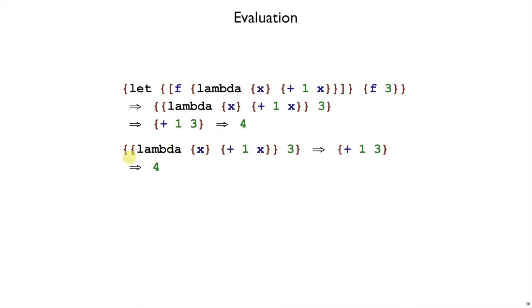We could also write, literally, left curly, left curly, lambda. That whole thing applied to 3, and we should still get 4. These two programs should be completely equivalent. So we'll have to make our interp function do that.